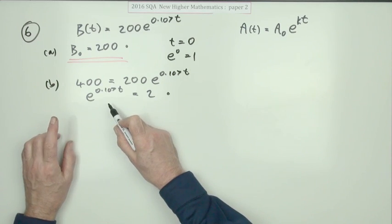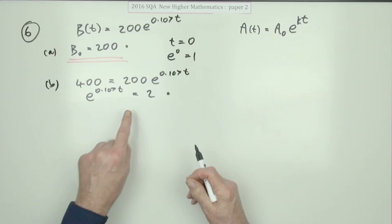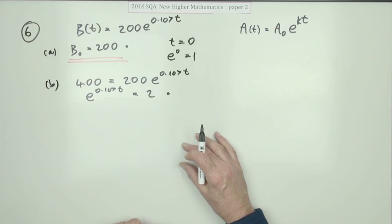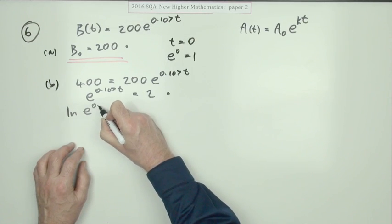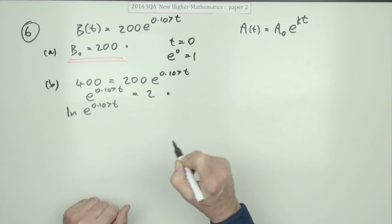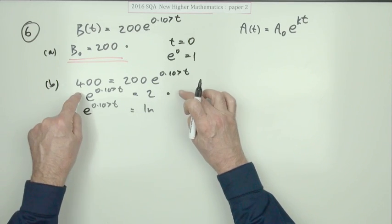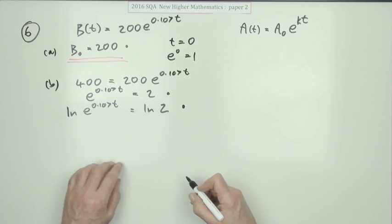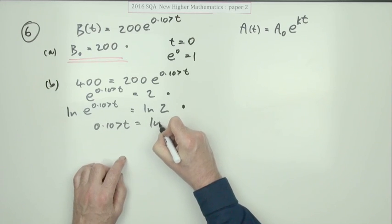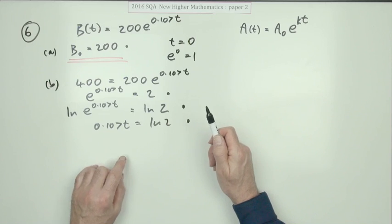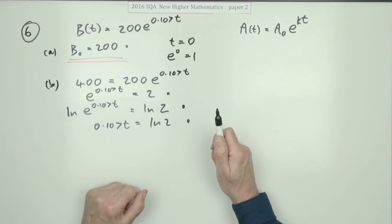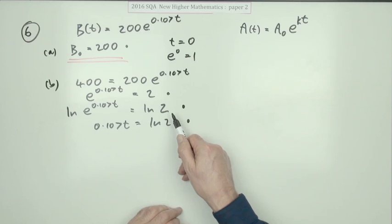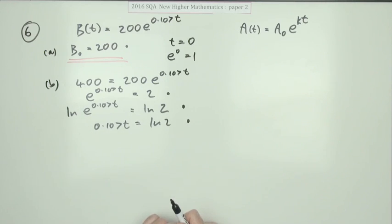However, it appears that what the marking scheme is actually looking for is applying a logarithm to both sides — not because it's the inverse, but because applying a logarithm allows you to extract a power. So the expected next line is Ln of e to the 0.107T equals Ln of 2, applying the natural log to both sides of the equation. That earns a mark, and the marking scheme notes you'd still get this mark for applying log to any base.